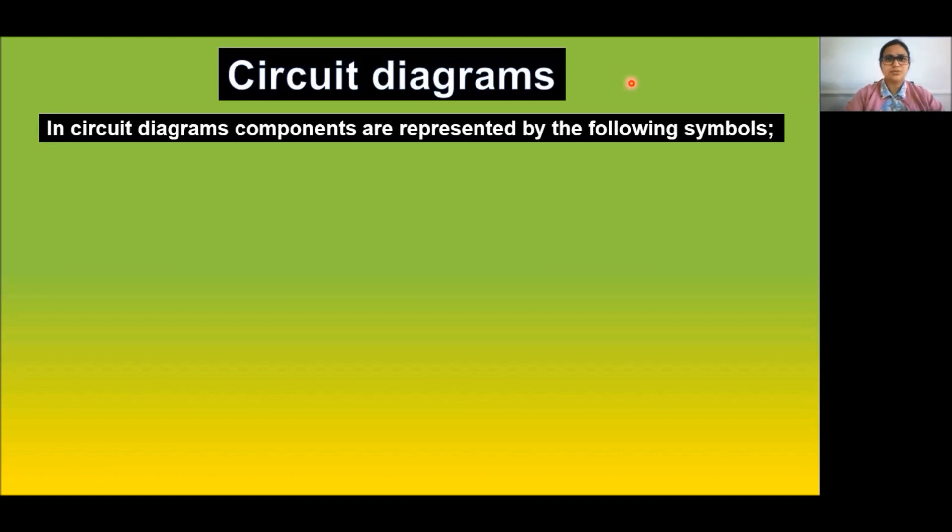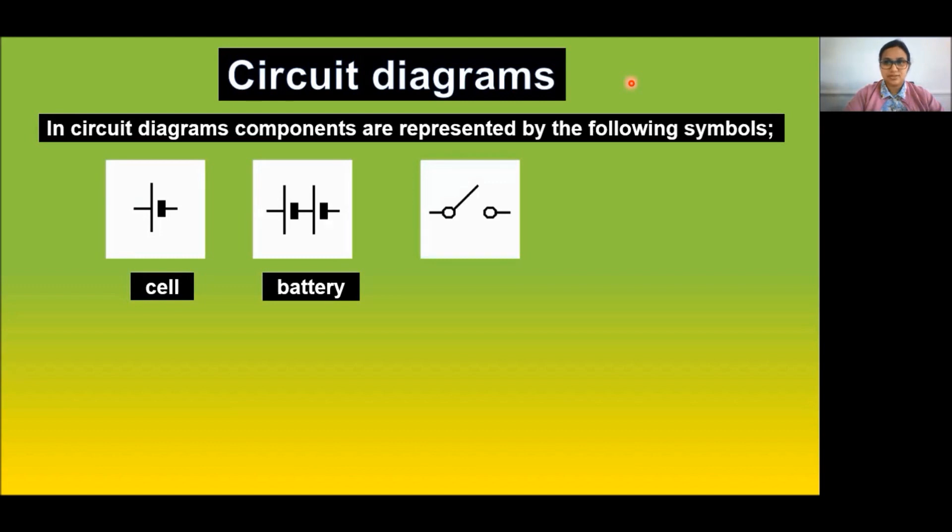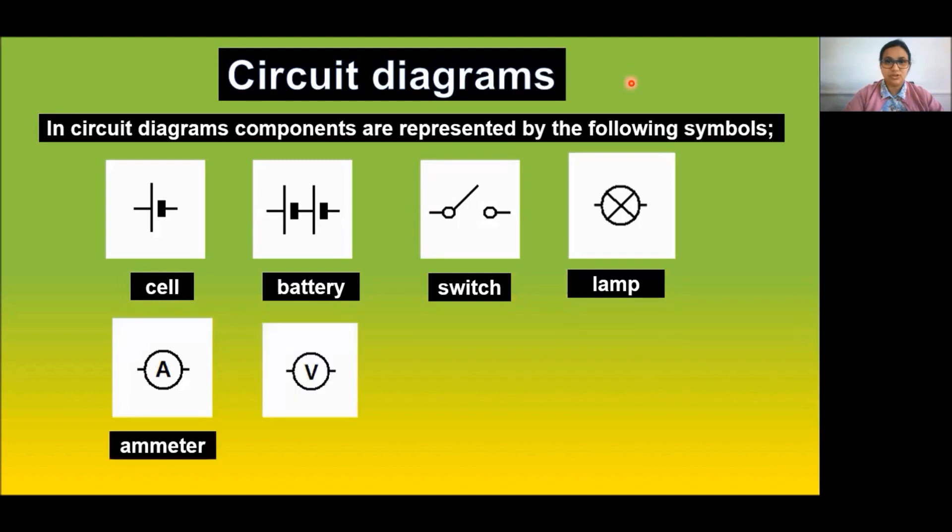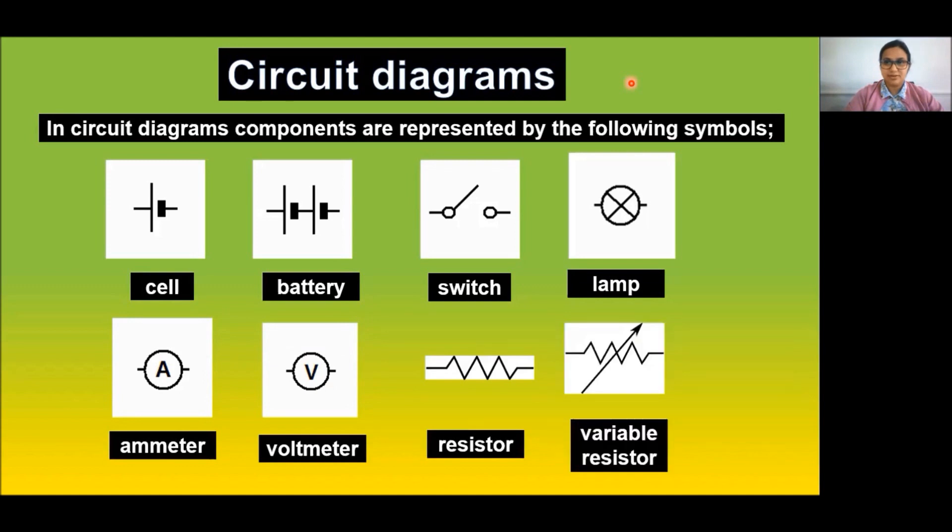What components do the symbols below stand for? This one is for a cell. Two cells connected together are called a battery. This is a switch, lamp or bulb, ammeter, voltmeter, resistor, and variable resistor. Let us learn one by one.